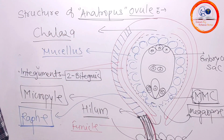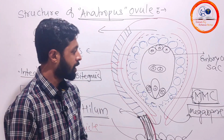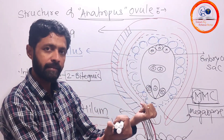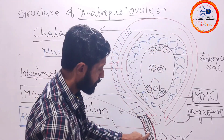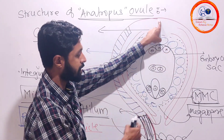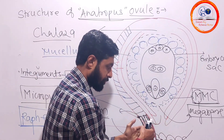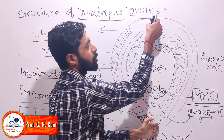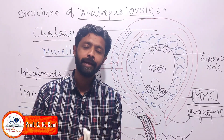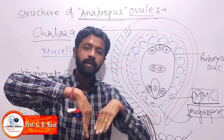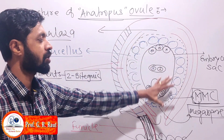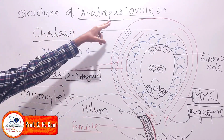Anatropous ovule is present in angiosperms. In the anatropous ovule, the chalaza and micropyle are at opposite ends. This ovule is said as an anatropous ovule. This is the structure of a fully mature anatropous ovule.